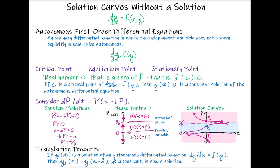You'll notice in this case the constant solution a over b has arrows pointing to it from both above and below. That means this constant solution or equilibrium value is considered to be an attractor or a stable equilibrium value. You'll also notice that zero has arrows pointing away from it both above and below it, which makes zero a repeller or an unstable equilibrium value.